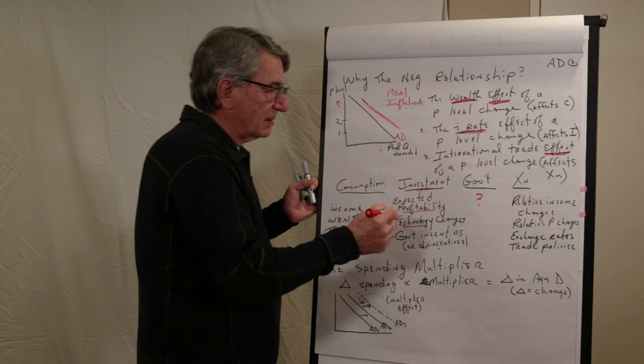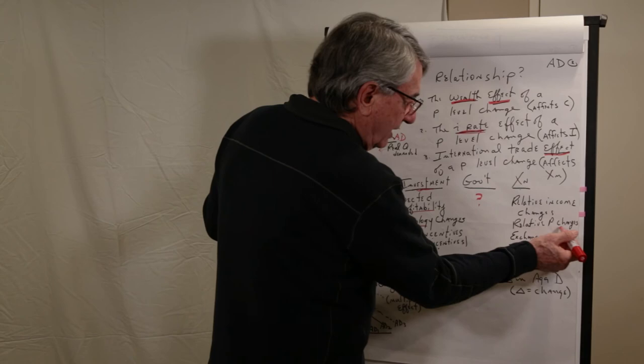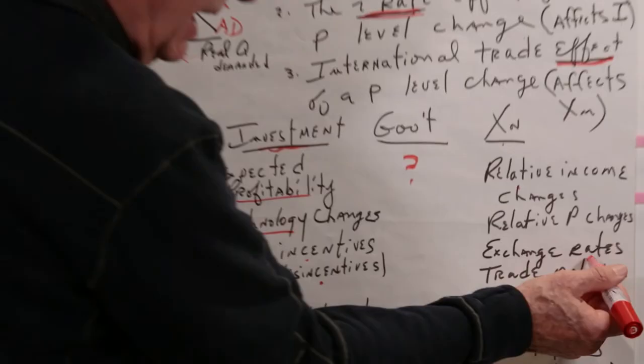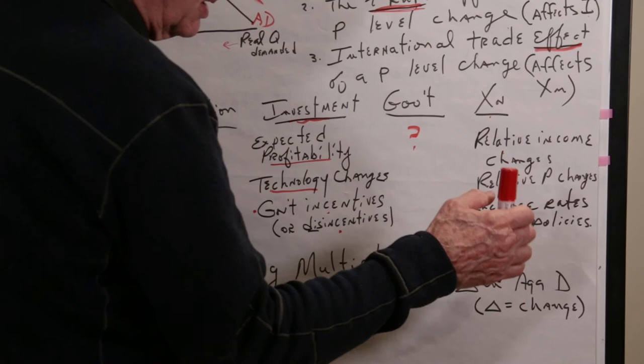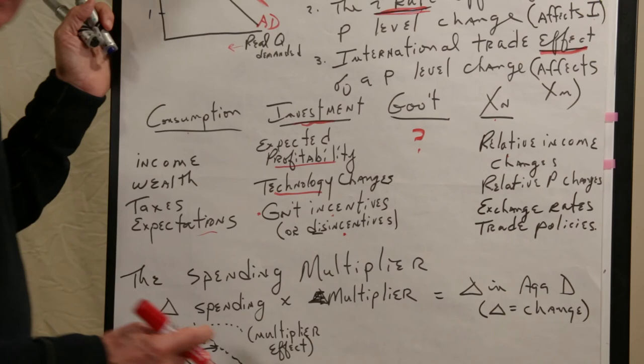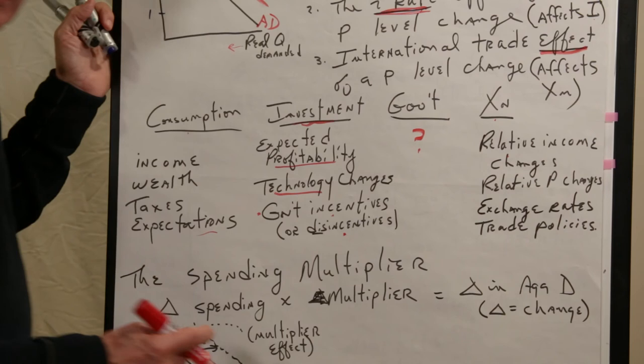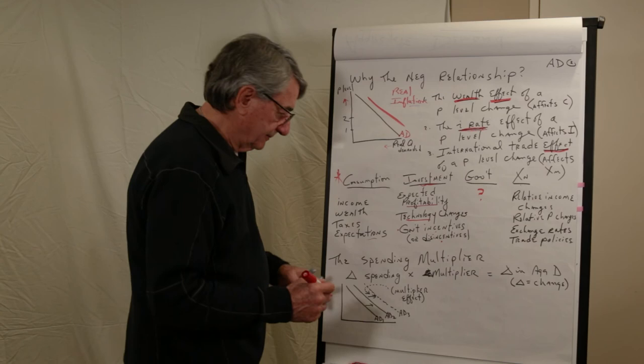And relative incomes in the two countries will cause that shift. Relative price changes in the two countries. Exchange rates change as well. And when the US dollar changes in value against the other foreign currencies, that makes imports more or less expensive. And that will cause shifts. And trade policies. If the United States starts going after other countries for this or that, then that would cause that shift as well.